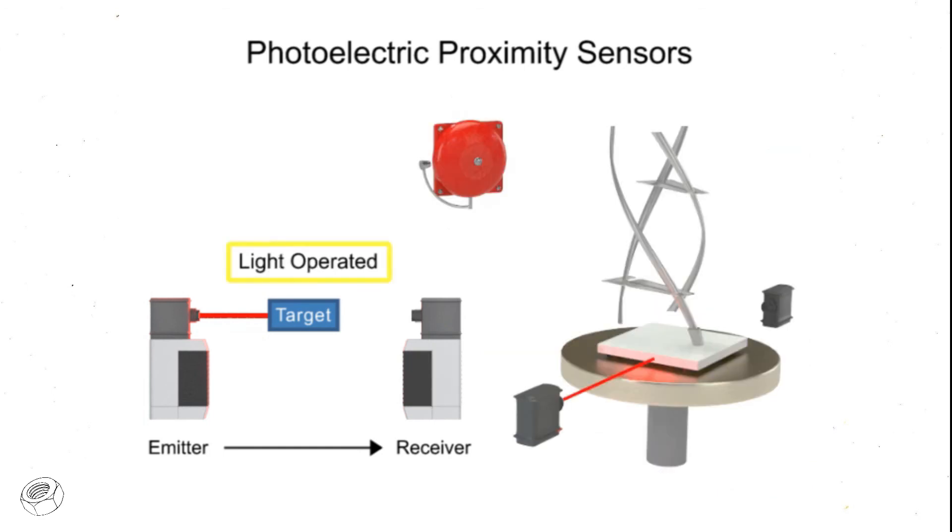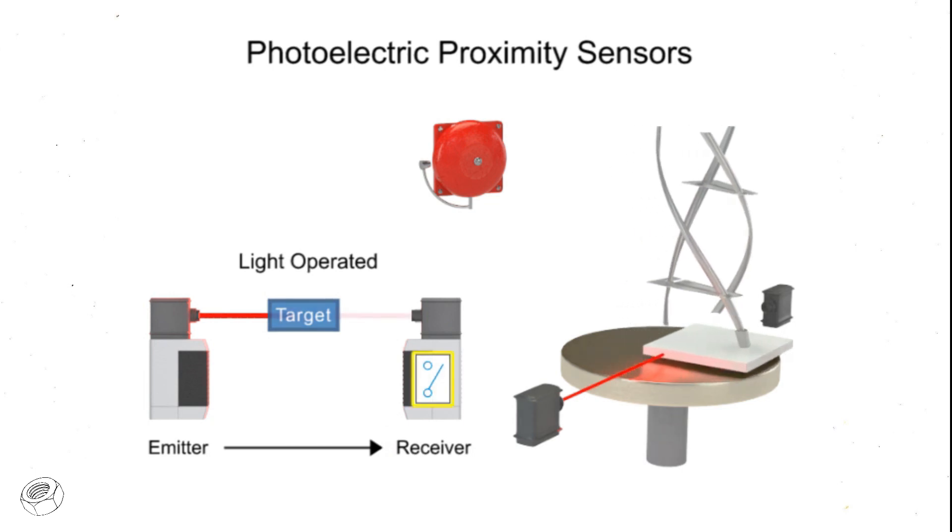Conversely, in this light-operated mode example, the absence of light being received by the receiver is normal. When the object is removed from the table, the switch is triggered and the alarm will sound.